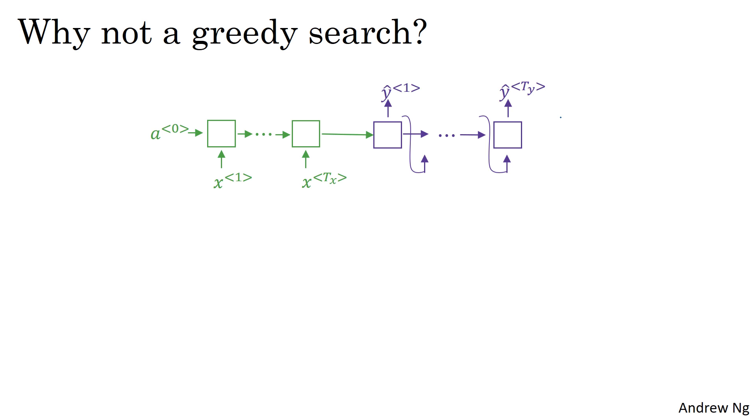So what is greedy search? Well, greedy search is an algorithm from computer science, which says to generate the first word, just pick whatever is the most likely first word according to your conditional language model, according to your machine translation model. And then after having picked the first word, you then pick whatever is the second word that seems most likely, and then pick the third word that seems most likely. And this algorithm is called greedy search.